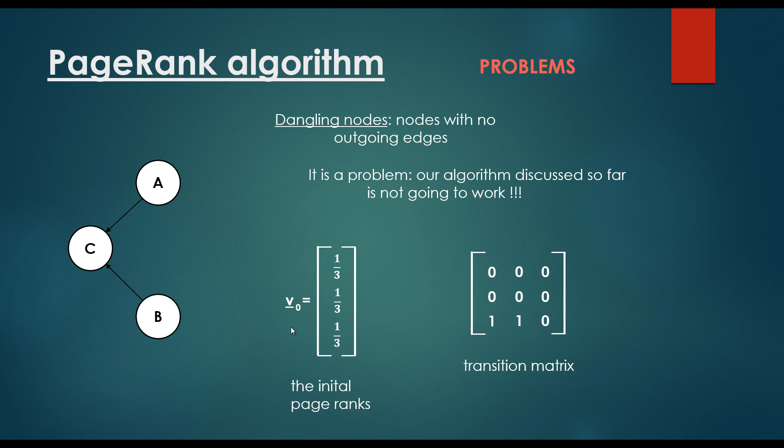The initial page ranks is going to be 1 divided by N. We have 3 websites, so 1 divided by 3, 1 divided by 3, 1 divided by 3 are going to be the initial page ranks for all of the websites.